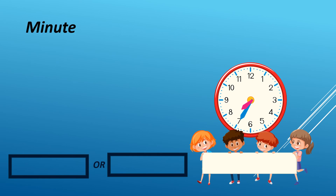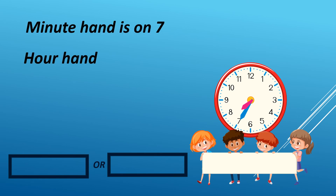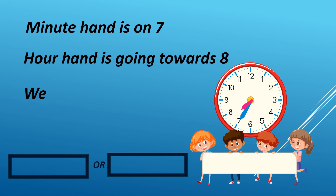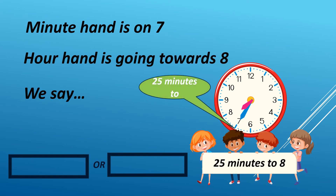When the minute hand is on 7 and the hour hand is going towards 8, we say 25 minutes to 8. It can either be AM or PM. For example, it is 7:35 AM in 12-hour format.